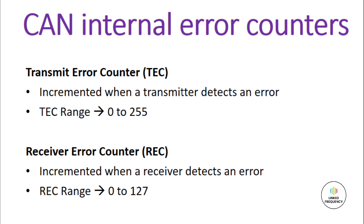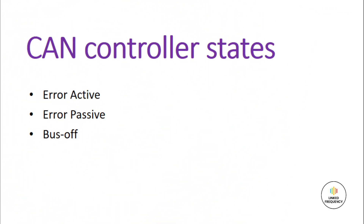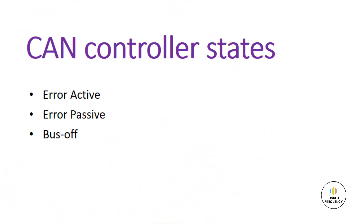The increment or decrement of the TEC or REC counter value depends on whether the error happened in the transmitter ECU or the receiver ECU. If an error is detected in either of them, the counter value is incremented. Based on the values of TEC and REC, the CAN node can be in three possible states: active error, passive error, and bus-off error.